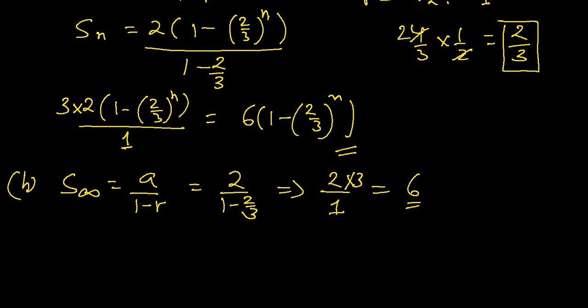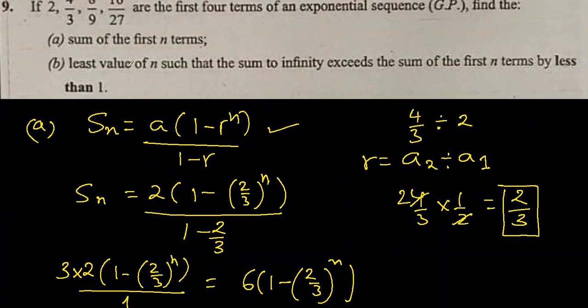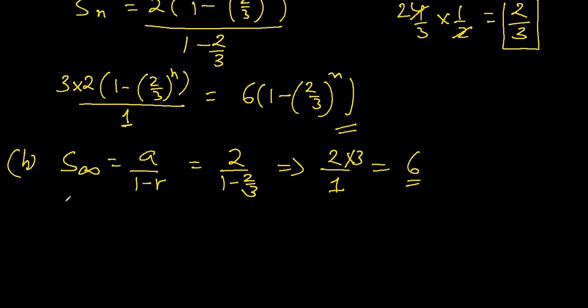Sum of first n terms we just found out earlier. So sum to infinity minus S_n is less than 1, that's what they're saying. Sum to infinity is 6.